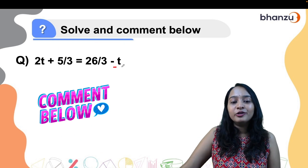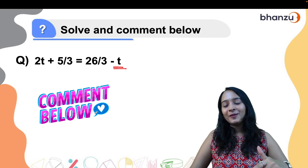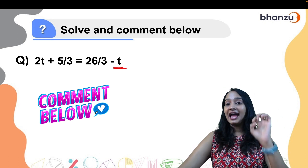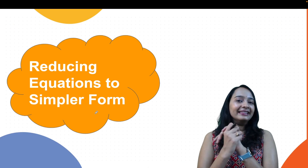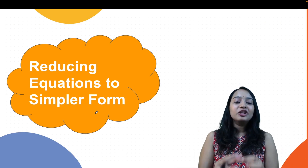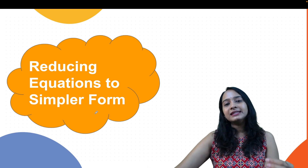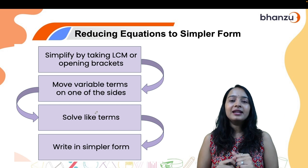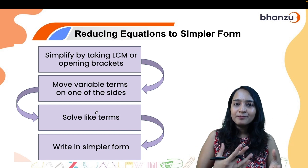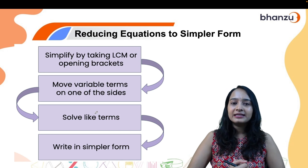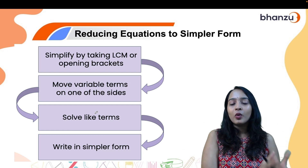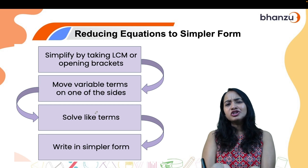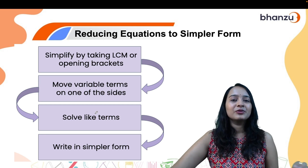Solve for the value of t and let me know in the comments — I will reply to each and every correct answer. Now let's move to the next concept: reducing equations to simpler form. If there is a fraction, take the LCM; if there are brackets, open them; then move variables to one side and constants to the other and solve using the transposing method.